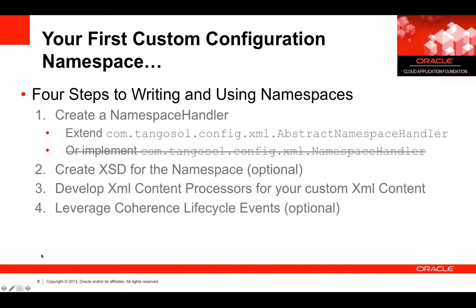It's actually pretty easy to write one of these. There are really just four steps. The first step is to create a namespace handler. The easiest way is to extend the abstract namespace handler provided by Coherence — in fact Coherence itself uses this for its configuration. Alternatively you could implement the namespace handler interface, but that requires a lot of extra work. The second step is optional: create an XSD for your namespace. The third step is to create content processors for the different types of content in your namespace. Lastly, we can talk about leveraging Coherence lifecycle events.